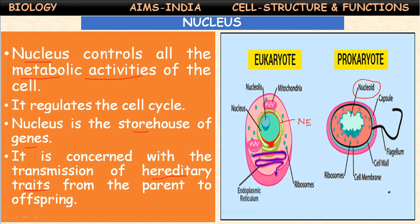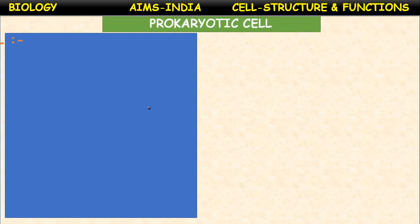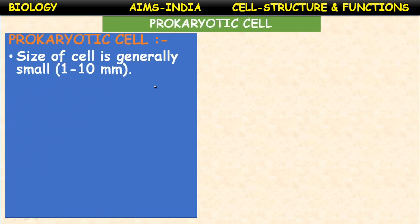On the basis of the presence of a nucleus, cells are of two types: eukaryotic cells and prokaryotic cells. Prokaryotic cell: 'pro' means primitive, 'karyon' means nucleus. A cell with a primitive nucleus is called a prokaryotic cell.